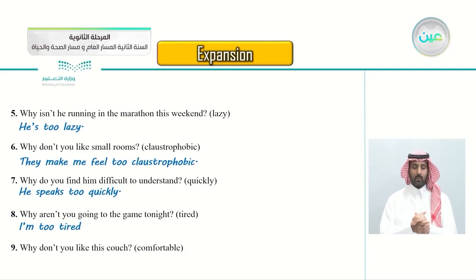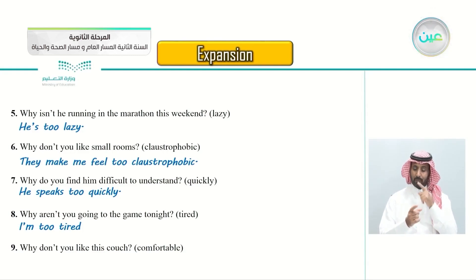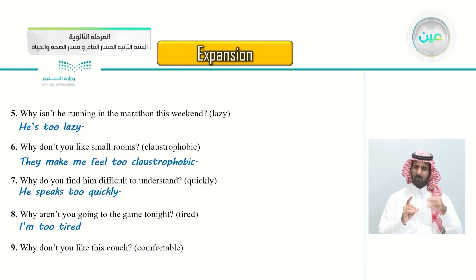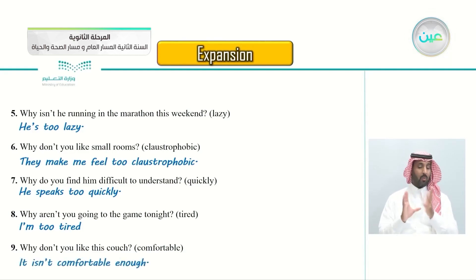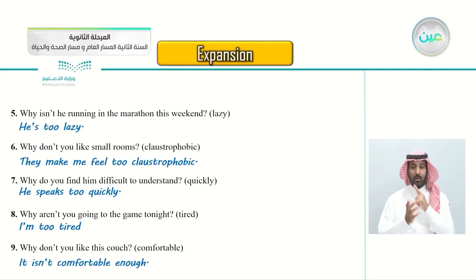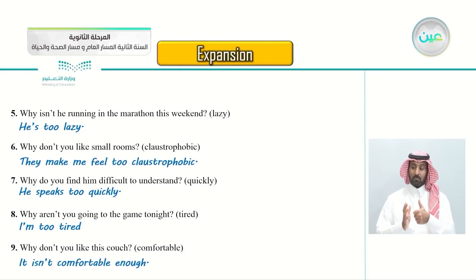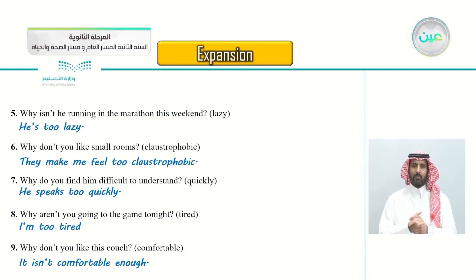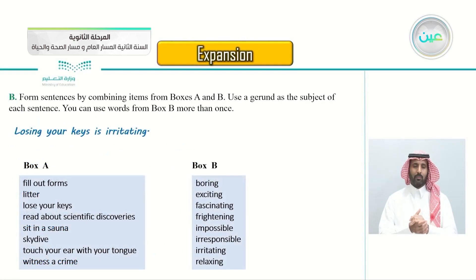Number nine: why don't you like this couch? The word is 'comfortable'. The answer is: because it isn't comfortable enough. You can't say 'because it's too comfortable' — then you'd like it. You say: it isn't comfortable enough.